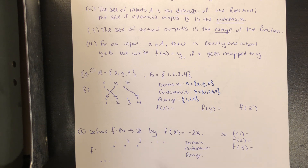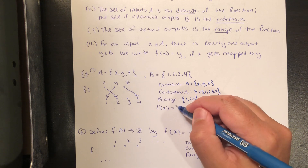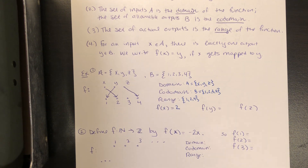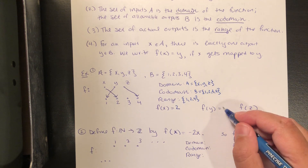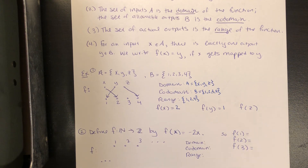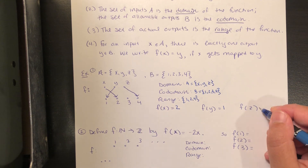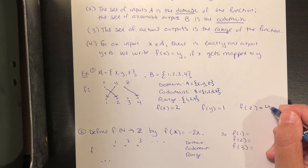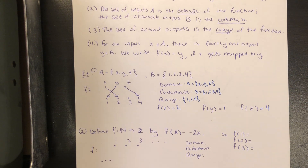We would also say using this notation that F of X is equal to 2, because X gets mapped to 2; F of Y is equal to 1, because Y got mapped to 1; and F of Z is equal to 4. So this diagram tells us everything we need to know about this function.